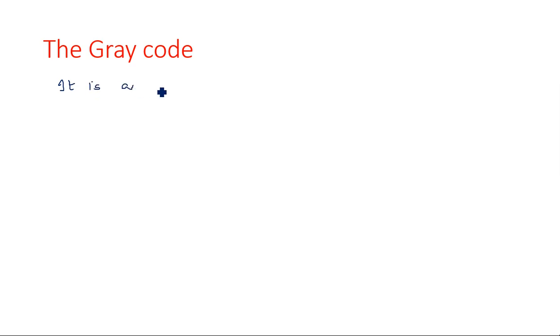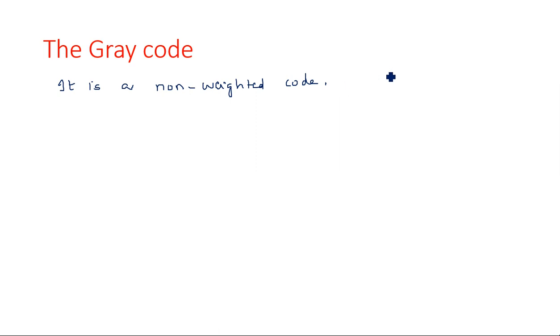In this video I am going to explain gray code and its conversion from binary to gray code and gray code to binary. Gray code is a non-weighted code, also known as a reflective code. Non-weighted means it does not follow 2 power 0, 2 power 1, 2 power 2 and so on — those weights do not apply to gray code.